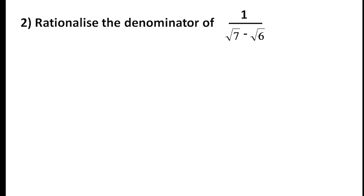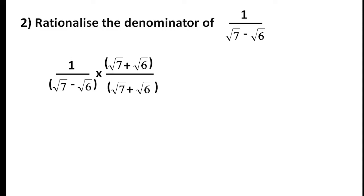Rationalize the denominator of 1 by root 7 minus root 6. If the denominator is root 7 minus root 6, we use the conjugate — the opposite sign — that is root 7 plus root 6. We multiply the numerator and denominator by root 7 plus root 6.